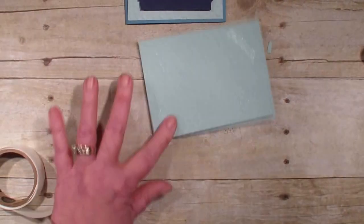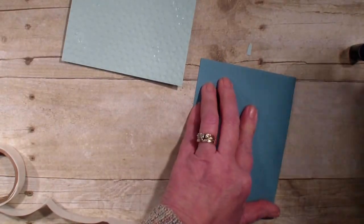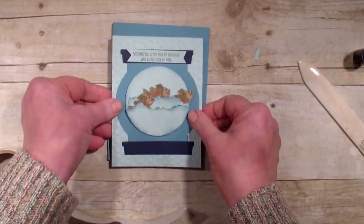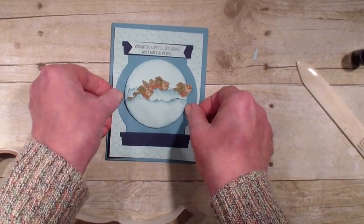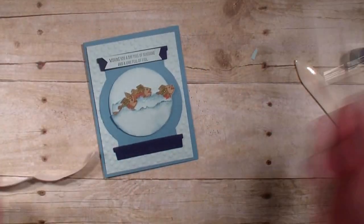Bringing in a half sheet of the Marina Mist—of course, this measures five and a half by eight and a half—and just put that fish globe right on there. So there you have it, a very quick man's card.